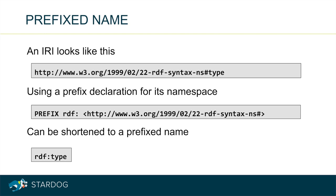Since IRIs are long and not very human friendly, when we write them in RDF and SPARQL, we shorten them by using a prefix. Here, we are declaring the prefix RDF for this long built-in RDF namespace. Then the prefix name RDF colon type represents the IRI that is the concatenation of that namespace with the local name type. So instead of this long IRI, we can always use this prefix name instead.